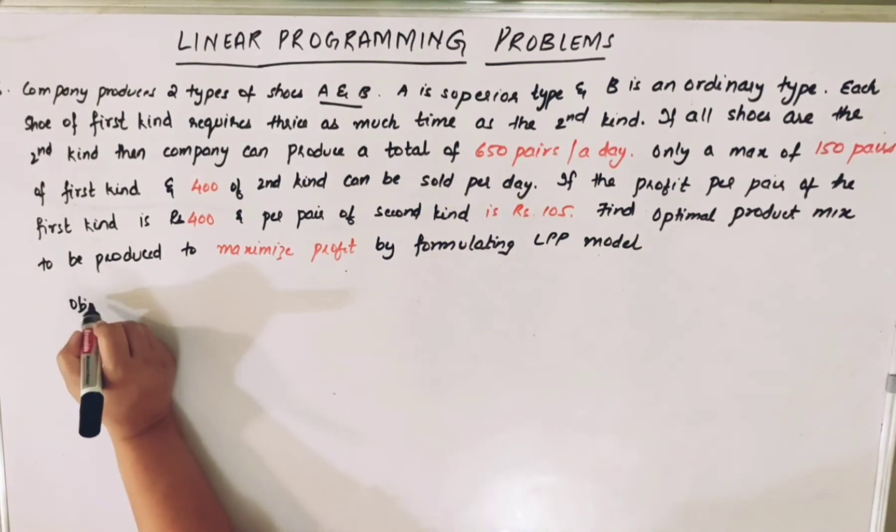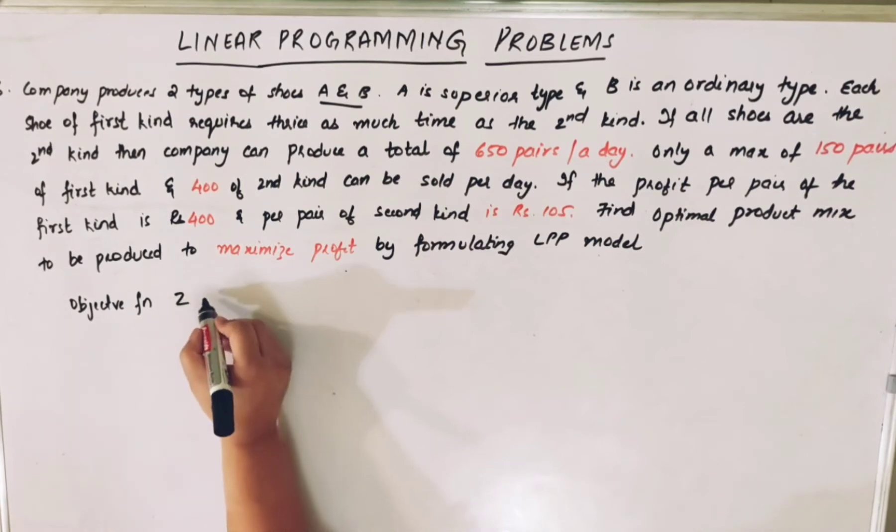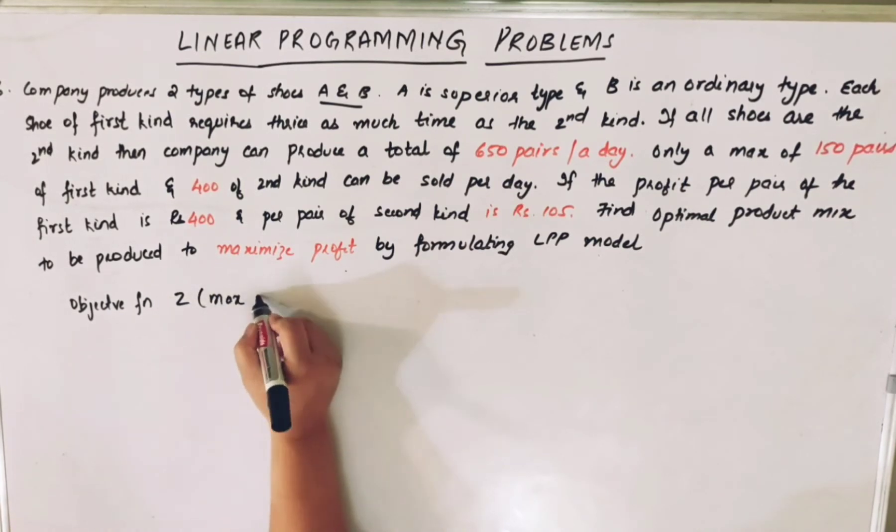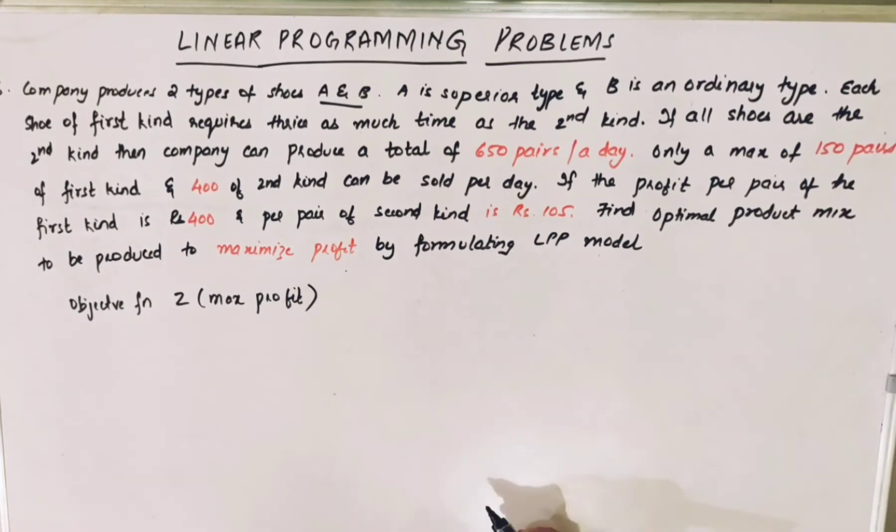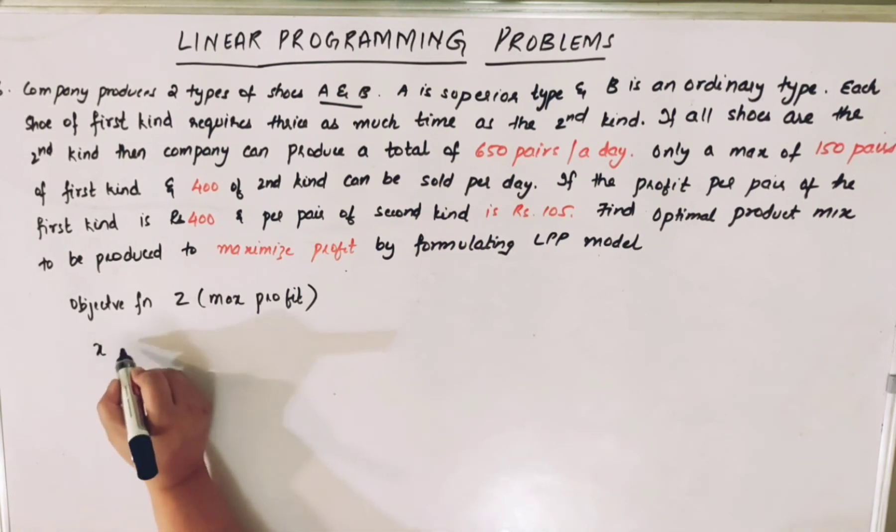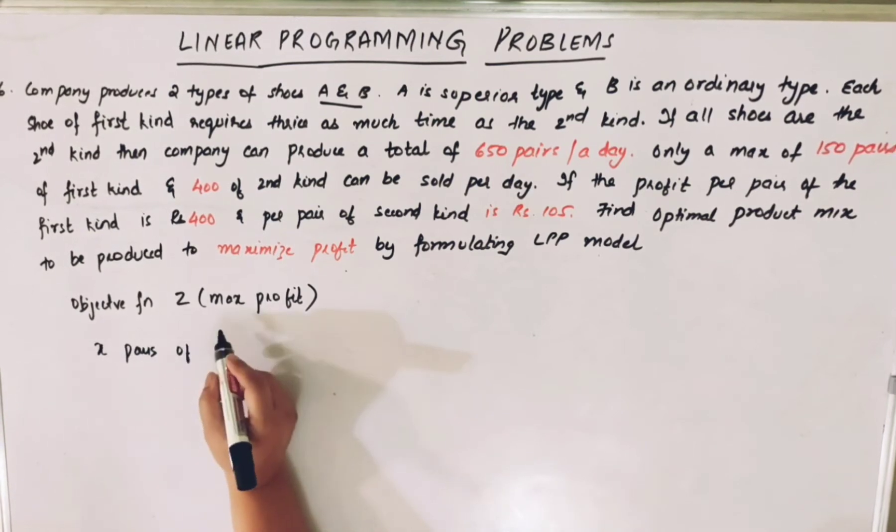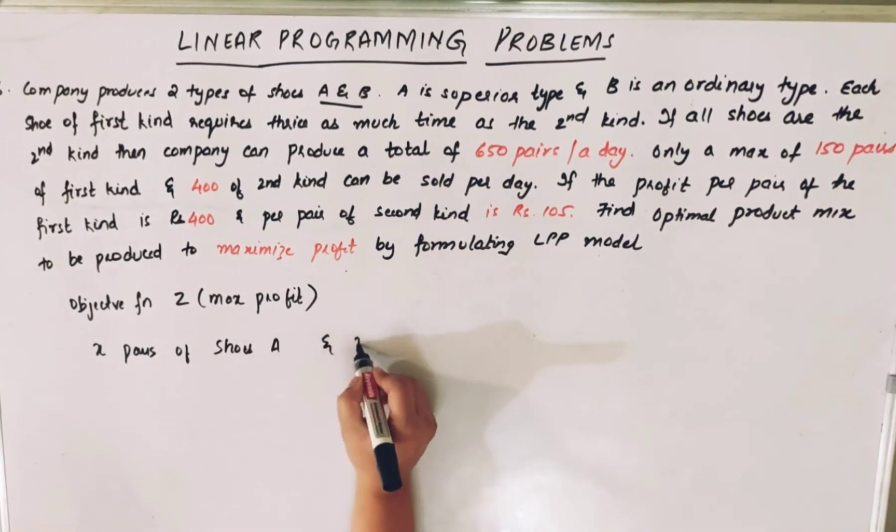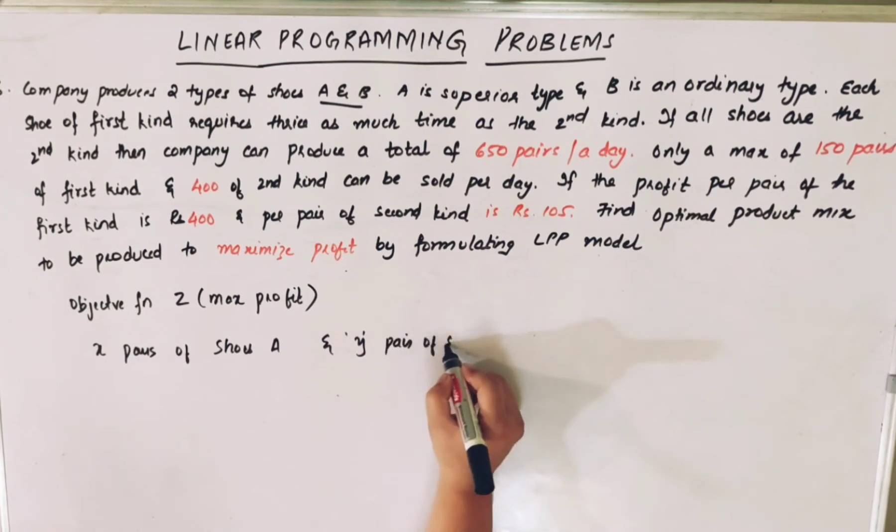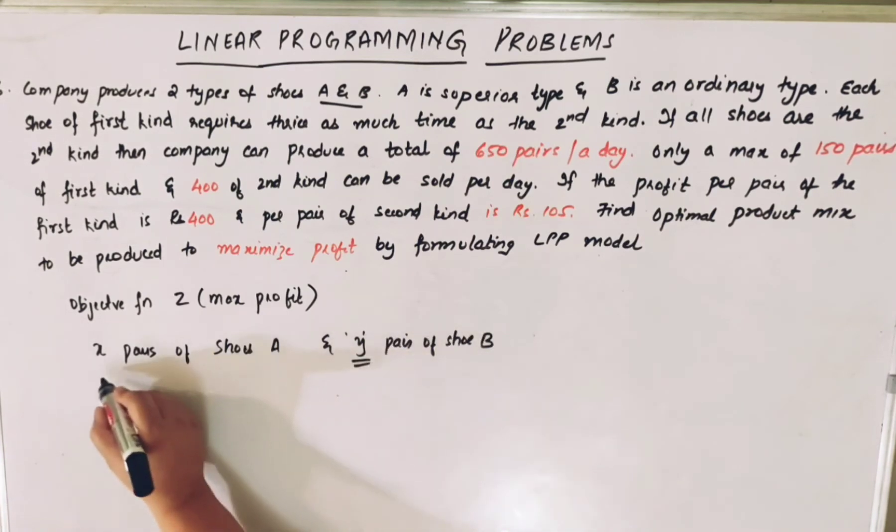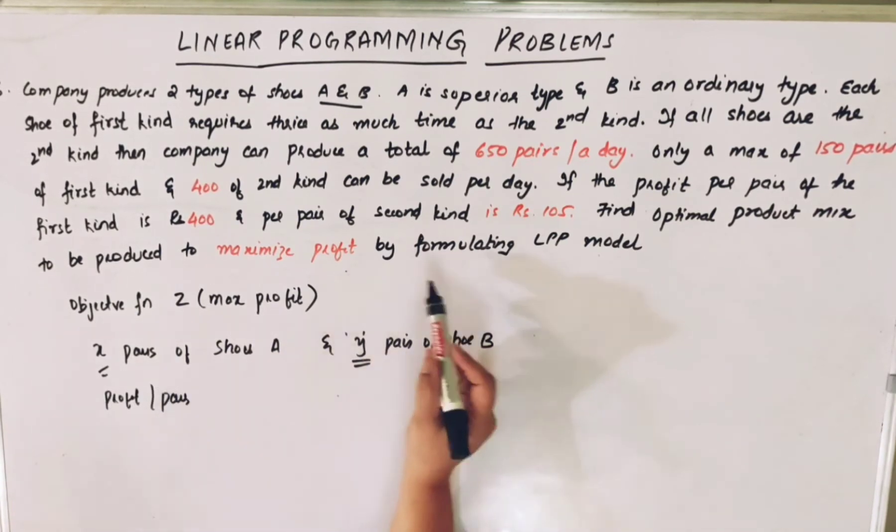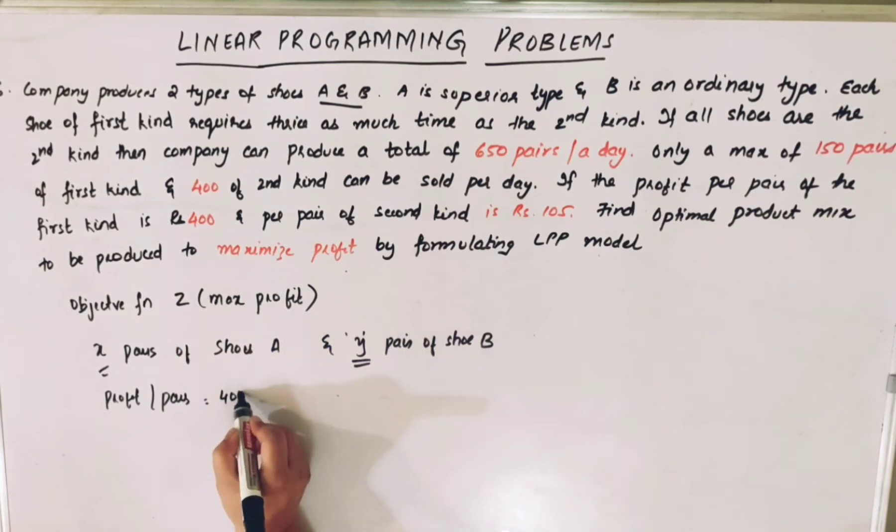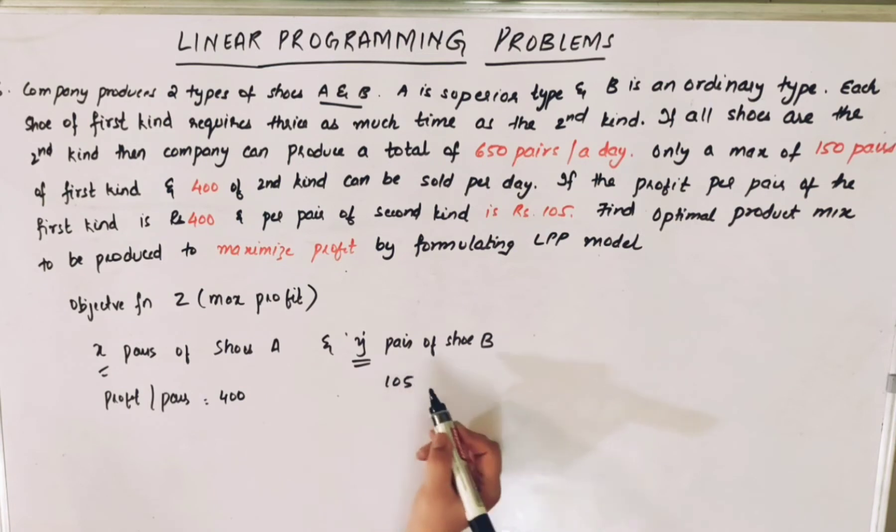Let's find the objective function first. Objective function Z, which is to maximize profit. Now profit per pair of shoe A and shoe B is given. So let's assume that there are X pairs of shoe A and Y pairs of shoe B. What is the profit per pair for first kind?